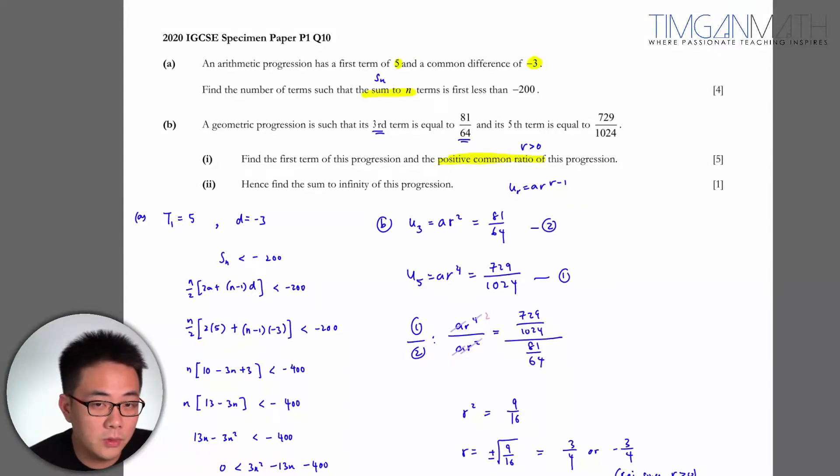So for the last part b, part 2, you're told to find the sum to infinity. Sum to infinity would just be a over 1 minus r.